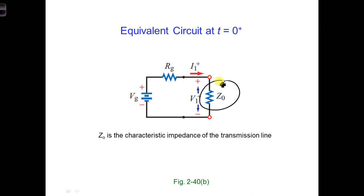Here's a diagram of an equivalent circuit for the generator connected to the transmission line at time t equals zero plus.